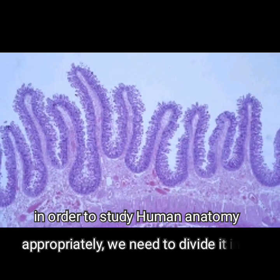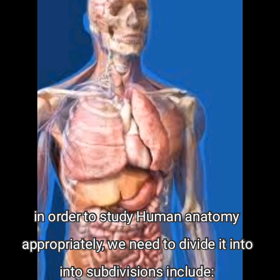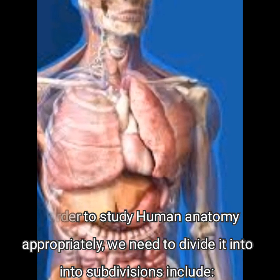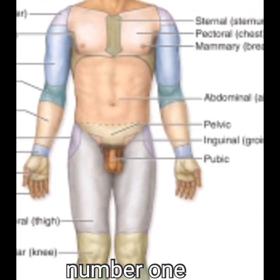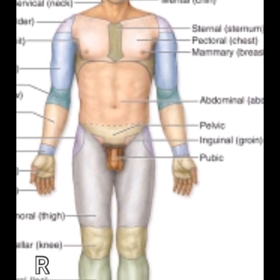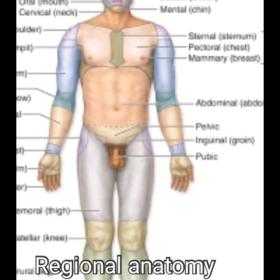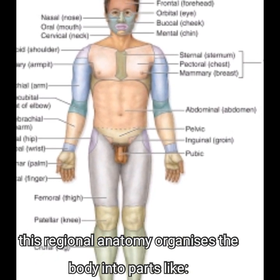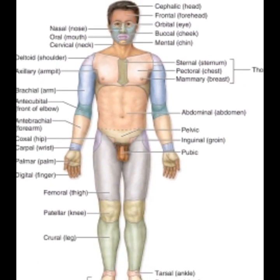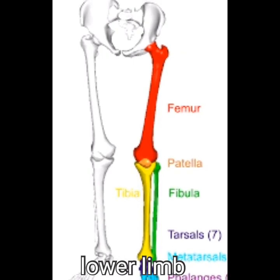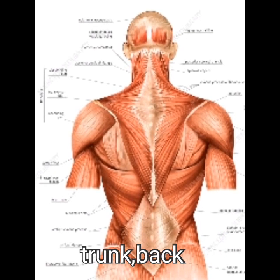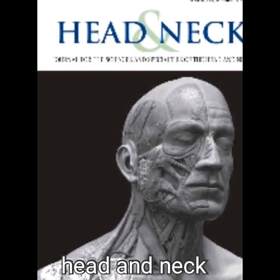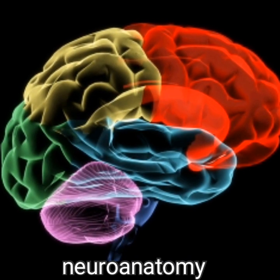In order to study human anatomy appropriately, we need to divide it into subdivisions. Number one is regional anatomy. Regional anatomy organizes the body into parts like upper limb, lower limb, trunk, back, thorax, abdomen and pelvis, head and neck, and neuroanatomy.